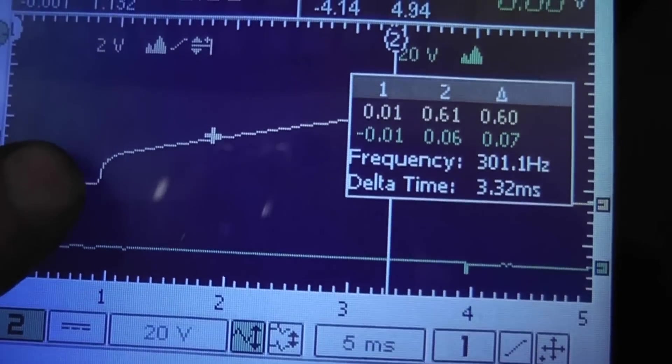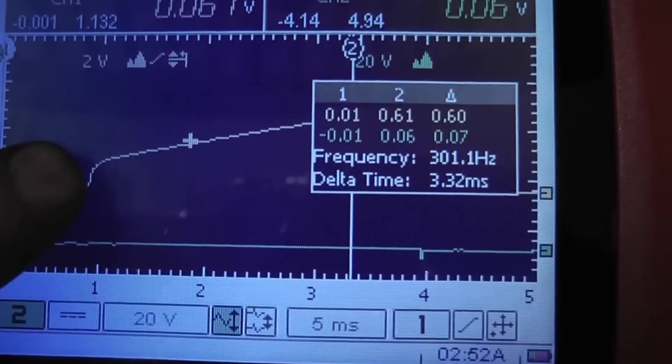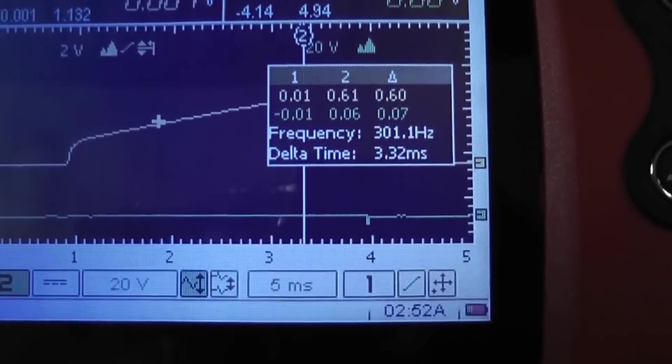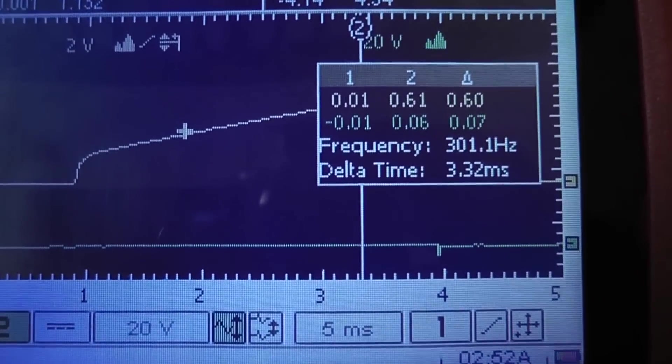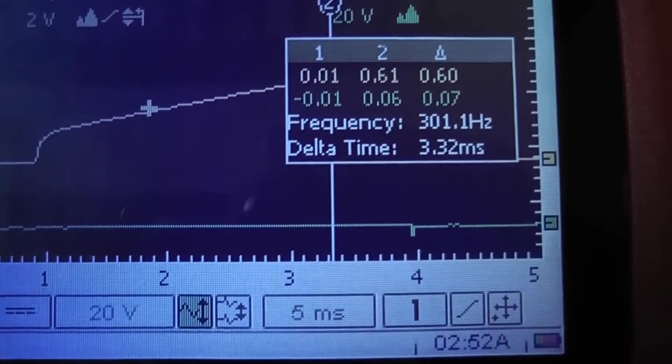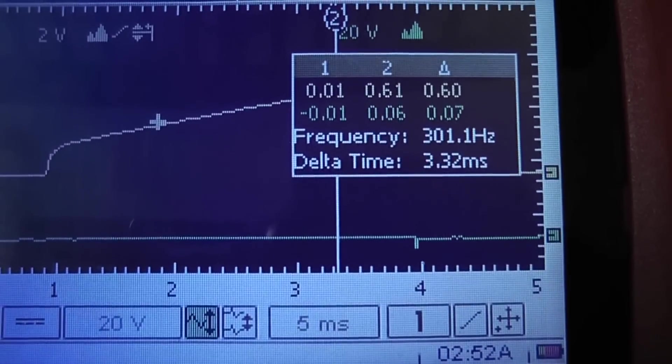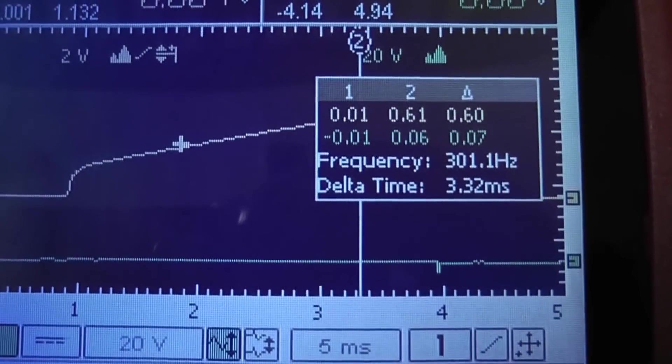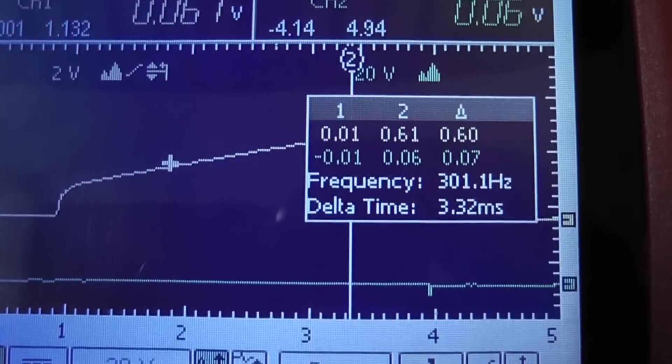You see the straight up line right here? That's not a short in the primary. What that is on this design is a shorted secondary. When you see that where we don't see turn-on oscillation, that is my number five, that is the one we were worried about.